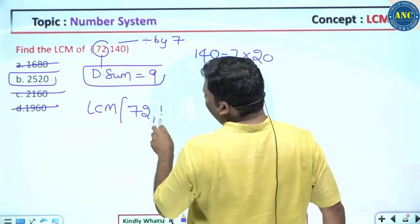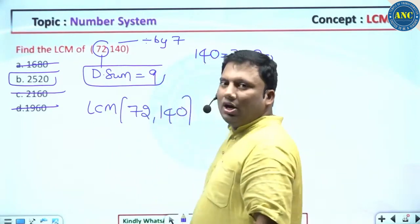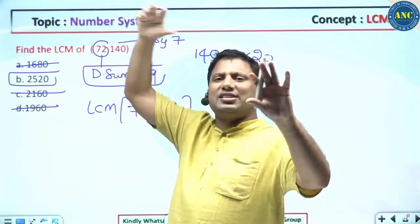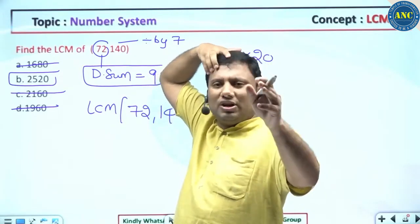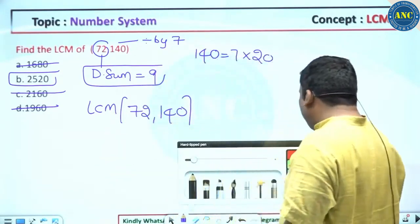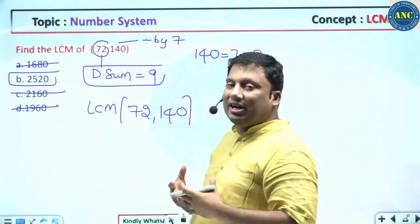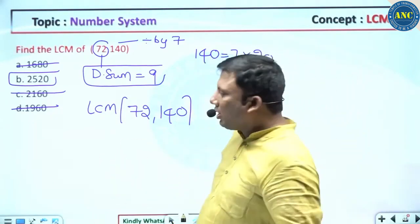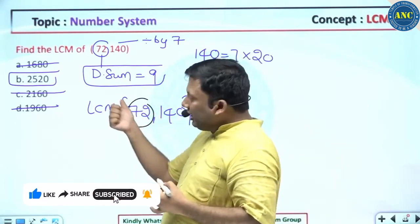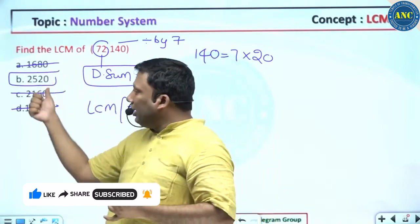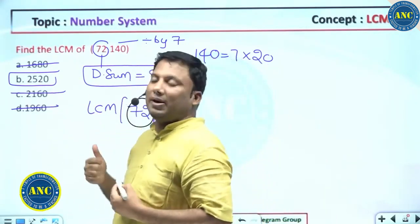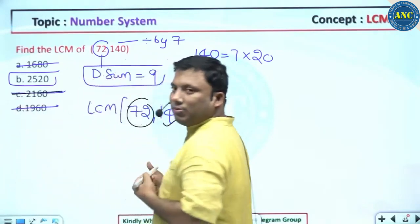Don't use the traditional RS Agarwal long method for LCM. RS Agarwal is a practice book, not a conceptual book — you will not find a single concept in it, only problems to practice. If you do not understand the reason behind the method, you are moving in the wrong direction. For 72 and 140: digital sum of 72 is 9 so answer digital sum must be 9; 140 is divisible by 7 so the answer must be divisible by 7 — 2160 is not divisible by 7, so it's eliminated.